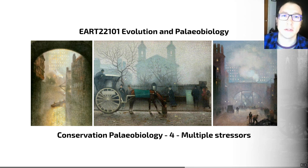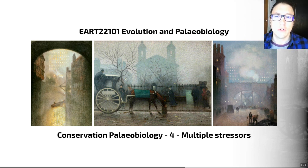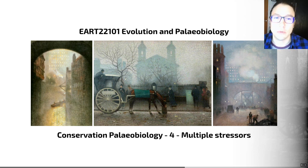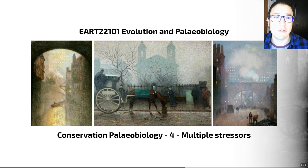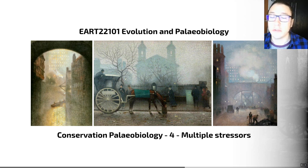Think about a meteorite impact, for example, driving extinctions. Hence, working out how stresses interact is really important. Are they additive or are they multiplicative? Indeed, the present state of modern ecosystems probably reflects the complex cumulative history of stress and stress release. And so by using the fossil record, we can dig into that history and hopefully understand it slightly better.